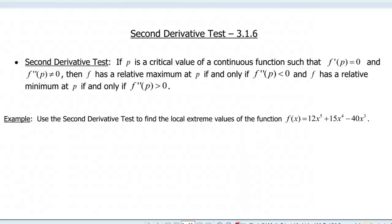Hello and welcome to a screencast about the second derivative test. So the second derivative test says that if p is a critical value of a continuous function such that f prime of p is equal to 0.